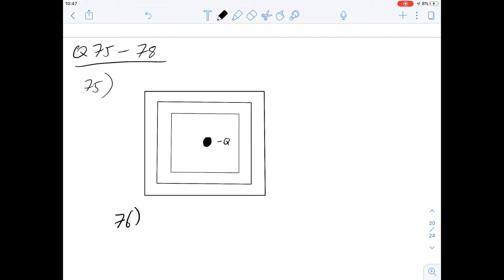We'll start off with question 75, which is about a charged body suspended in some boxes that are made of uncharged conductors. So 75 says the induced charge on the outer surface of the smallest cylinder is what?